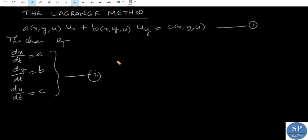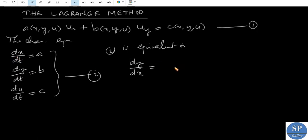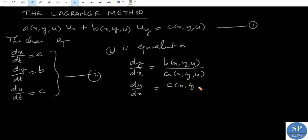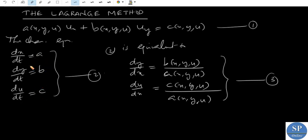Now, this system (2) is equivalent to the system: dy/dx equal to B(x,y,u)/A(x,y,u), and du/dx equal to C(x,y,u)/A(x,y,u), numbered as system (3). That is, system (2) is equivalent to system (3), which is a system of two first-order ODEs in the y, u plane, where x is the parameter.